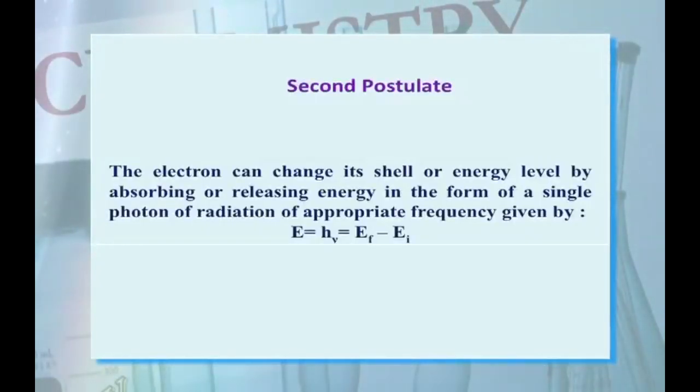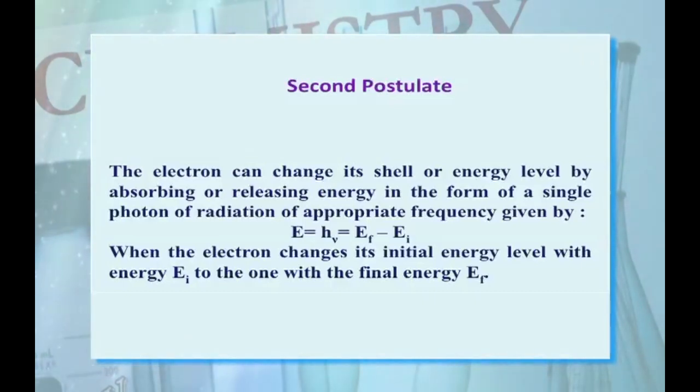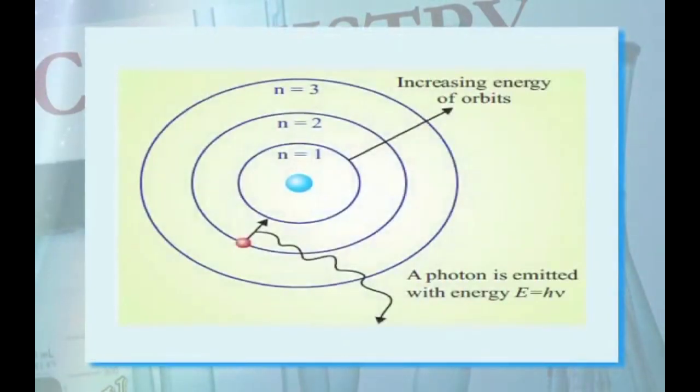Second postulate: The electron can change its shell or energy level by absorbing or releasing energy in the form of a single photon of radiation of appropriate frequency given by the relation E = hν = Ef - Ei. When the electron changes its initial energy level with energy Ei to the one with the final energy Ef. This is the actual representation of exchange of energy when the electron changes its orbit.